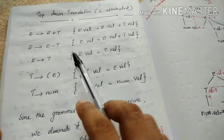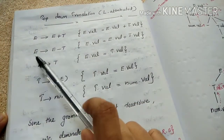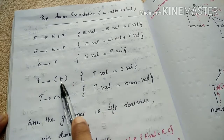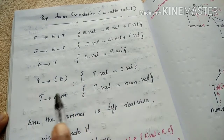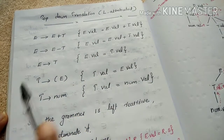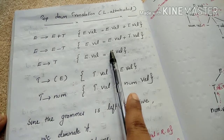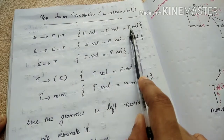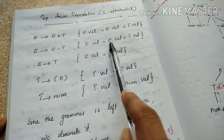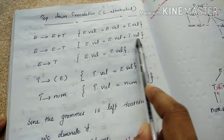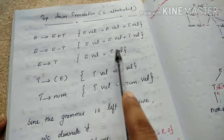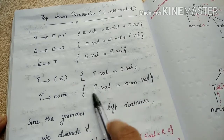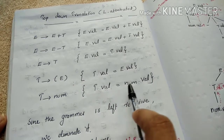I will present the grammar: E equals E plus T, E minus T, E equals T, T equals E, T equals L. The corresponding semantic actions are: E.val equals E.val plus T.val, E.val equals E.val plus T.val, E.val equals T.val, T.val equals E.val, T.val equals Numb.val.